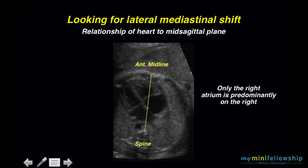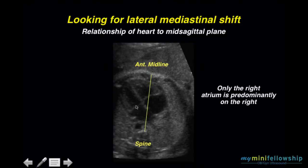We mostly concentrate on lateral mediastinal shifts. In this circumstance, I mentally draw the mid-sagittal plane to look at the position of the heart. The canting of the heart into the left hemithorax causes some problems, because only the right atrium is predominantly in the right hemithorax. The entirety of the left ventricle, nearly all of the left atrium, and nearly all of the right ventricle are in the left hemithorax.